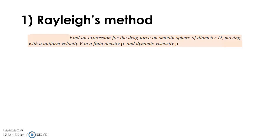We will solve a numerical problem using Rayleigh's method. The problem statement is: find an expression for the drag force on a smooth sphere of diameter d, moving with uniform velocity v, in a fluid of density rho and dynamic viscosity mu. The prerequisite to solve dimensional analysis problems is a thorough knowledge of how to write dimensions. From the problem statement, it is evident that drag force F is a function of diameter d, velocity v, density rho, and dynamic viscosity mu.